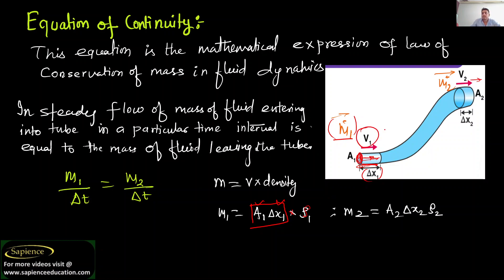Note that V1 here is your velocity — do not consider this as volume. Volume and velocity are different things. At the outlet, mass m2 equals A2 into delta x2 into density rho2. The density may be different at the outlet — I will come to that later.